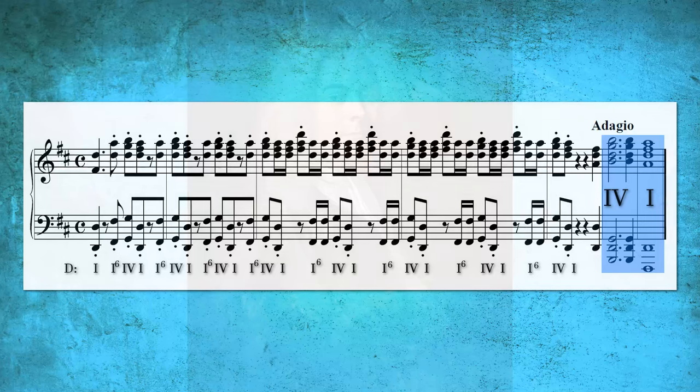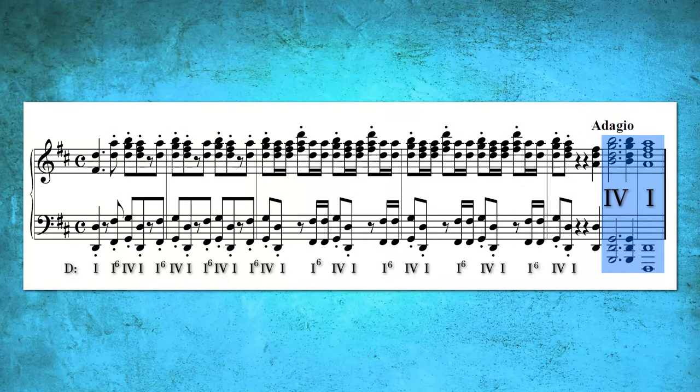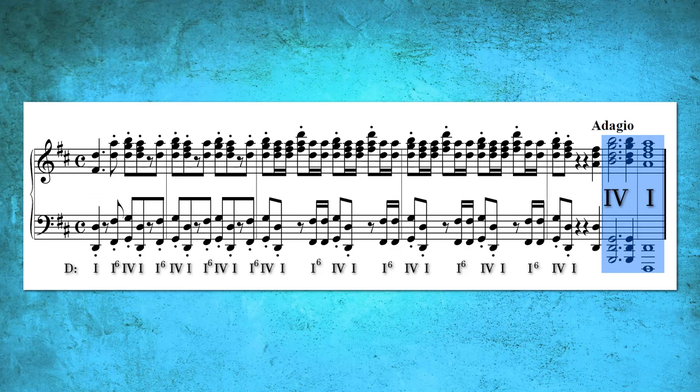One of the most renowned examples of the plagal cadence can be found in Handel's oratorio, The Messiah. In the iconic section titled Hallelujah, Handel employs the plagal cadence, drawing from hymnal traditions to conclude this segment of his piece. There's a tangible sense of closure, yet the transition from the four chord to the one chord maintains a roundness or softness.